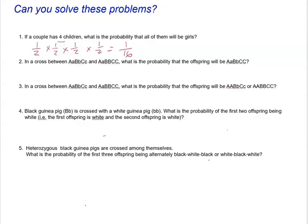Here's another question — problem number two. We have a cross between two specific genotypes, and we want to find the probability that the offspring will have a particular genotype. You can see this would be a tri-hybrid cross, and it would take a long time to complete a full Punnett square. So what we want to do is simply answer the question by looking at the probabilities for each trait individually. We have three sets of traits: big C, little c, and so on.